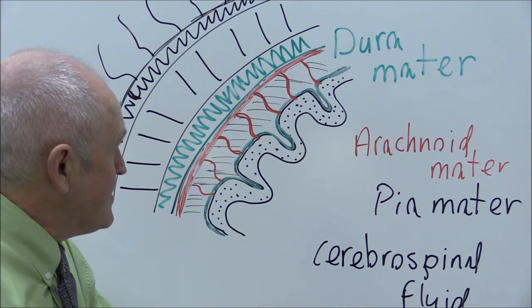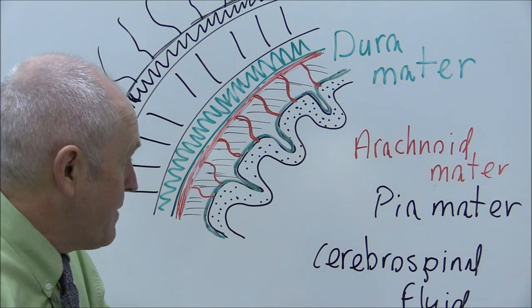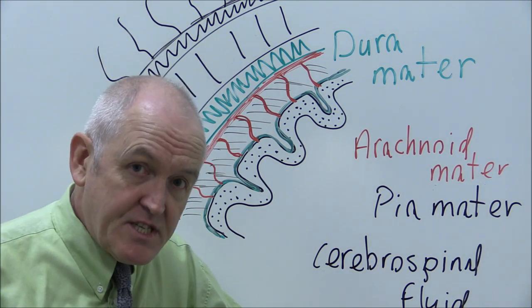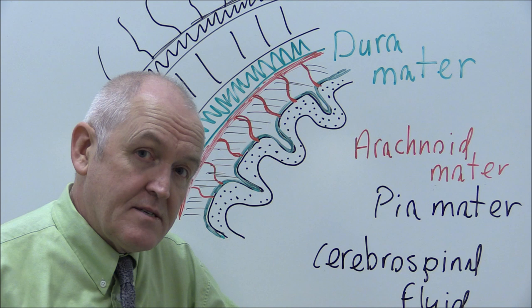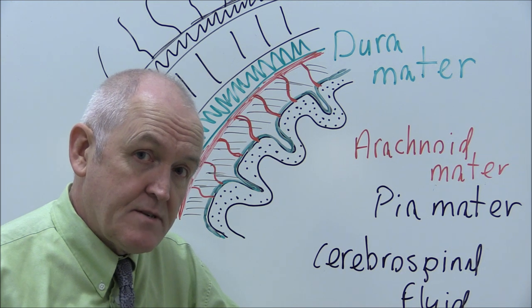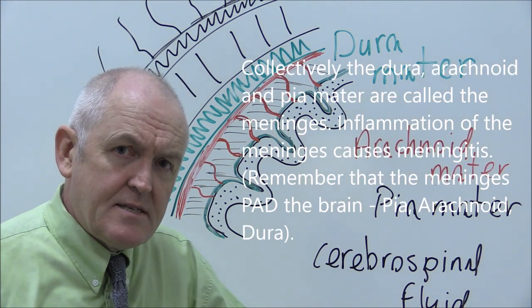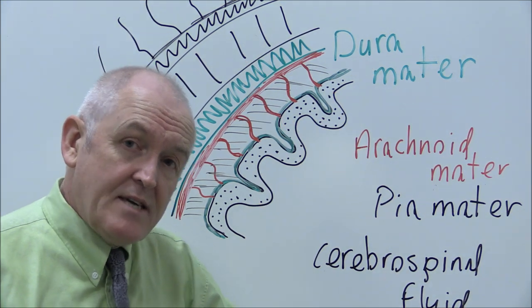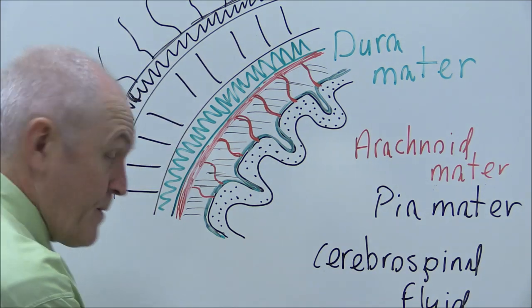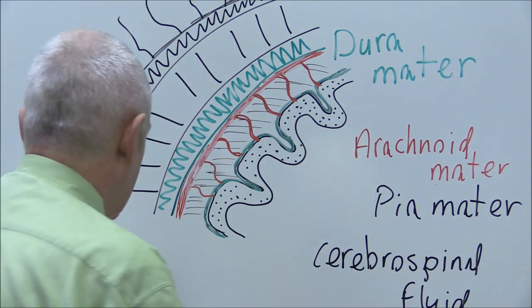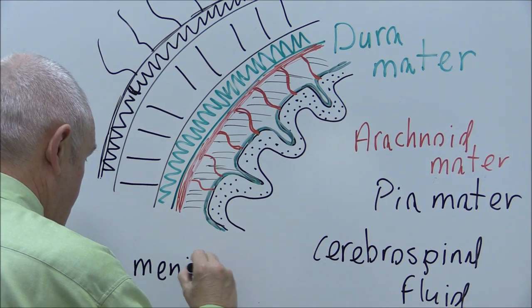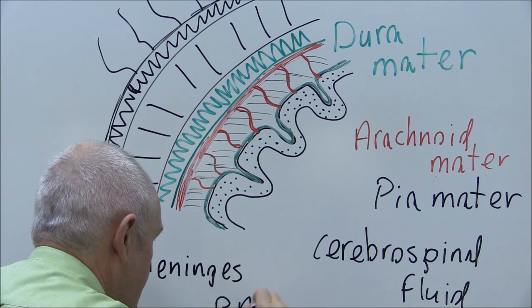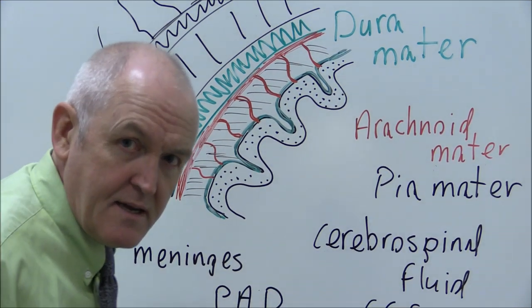Now collectively, the dura mater, the arachnoid mater, and the pia mater are described as the meninges, the meningeal layers. And of course, if they become infected, that's meningitis, which is very serious. So the meningeal layers, sometimes they're said to pad the brain. The meninges or meningeal layers pad. They pad the brain to stop it getting damaged.